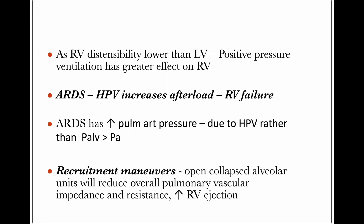In ARDS disease, the patient is in severe hypoxia, causing hypoxic pulmonary vasoconstriction, which increases RV afterload. Blood has to flow against higher pressures due to pulmonary vasoconstriction, and if prolonged, generally results in RV failure. In ARDS, there is increased pulmonary artery pressure due to hypoxic pulmonary vasoconstriction rather than alveolar pressure exceeding pulmonary arterial pressure. Recruitment maneuvers open collapsed alveolar units, reducing overall pulmonary impedance and resistance, leading to increased RV ejection — that is how recruitment maneuvers help.